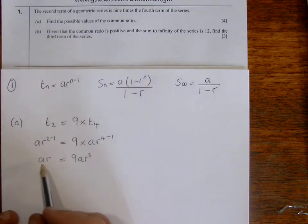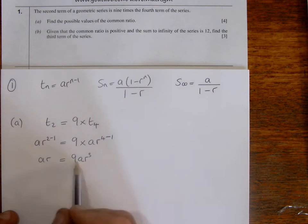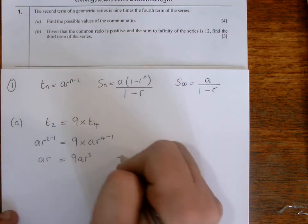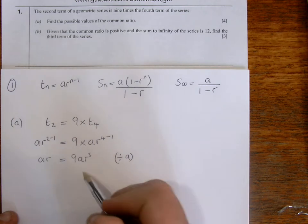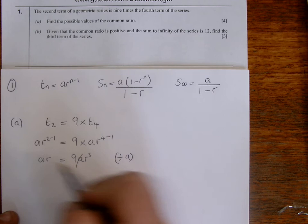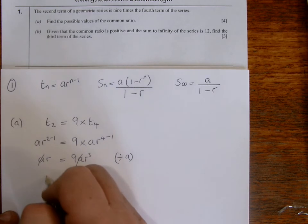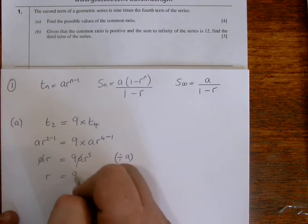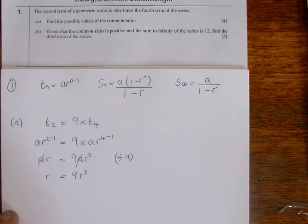So in this case then, because we've got a common factor of A on both sides, we can divide through by A, because A obviously is not going to be zero. So we're allowed to divide through by A, and they'll cancel. So we end up having R equals nine R cubed.